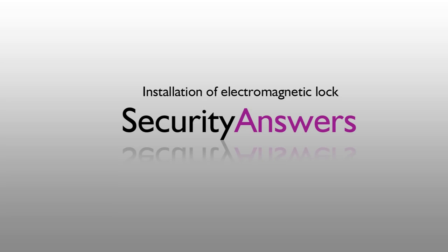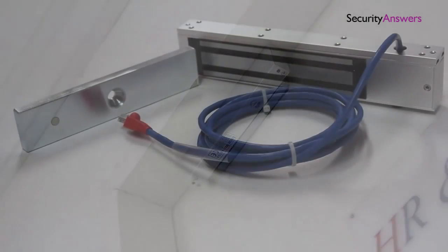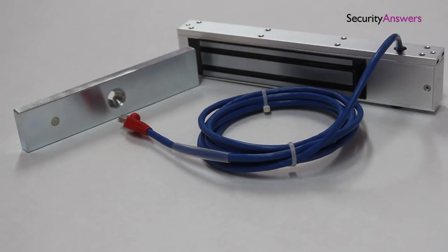In this video we will be looking at how to install an electromagnetic lock to a door and door frame of an access control system. We will be using an EM lock from Access Pro.